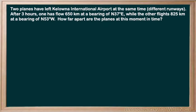We have an airplane problem here — two planes heading off in different directions, and we need to determine how far apart they are after a certain amount of time, given their distance from where they started. Let's lay this out; drawing a diagram is probably the smartest way to get started and get organized. We'll treat up as north, and then east and west.